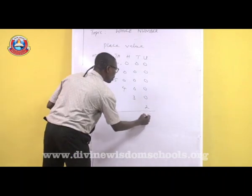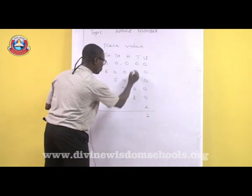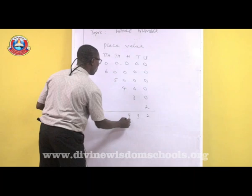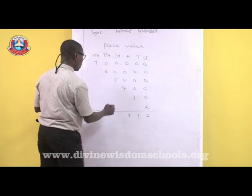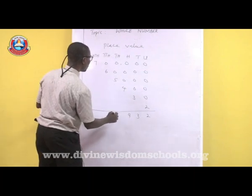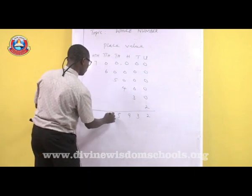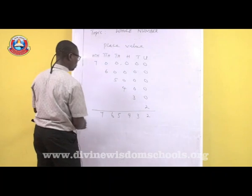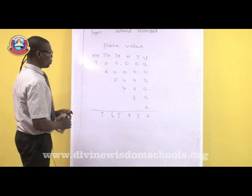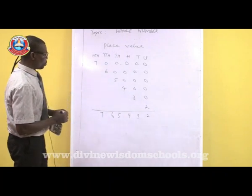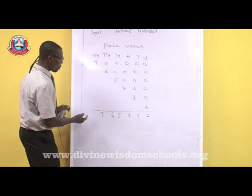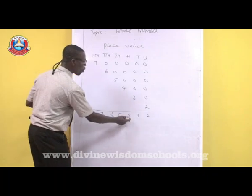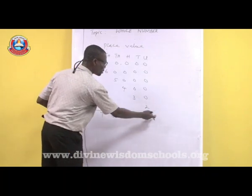Let me do that again. Now you have here 2, 3, 4, 5, 6, and 7. So we have 765,432.